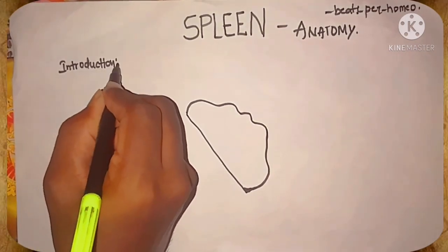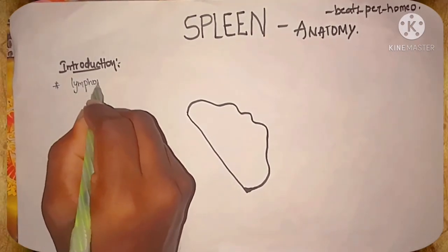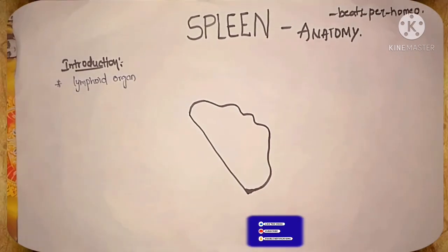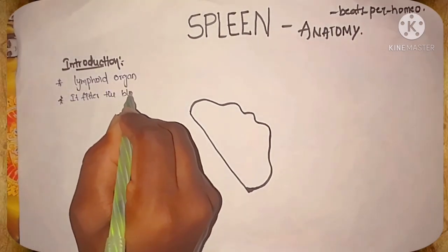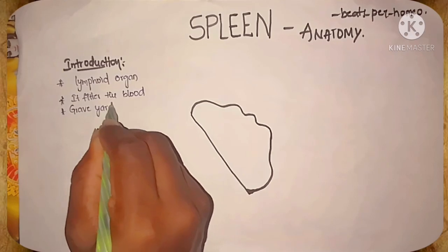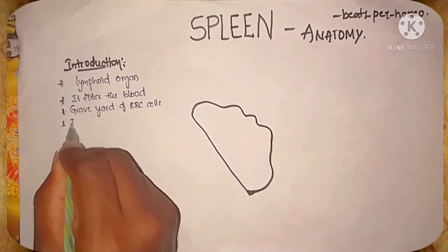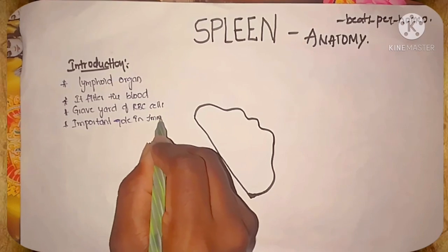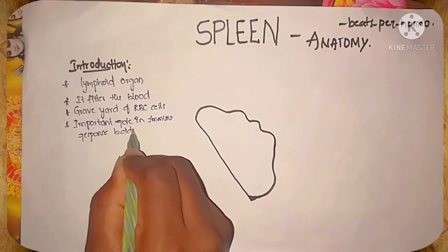Introduction: You all know that spleen is a lymphoid organ. It filters and purifies the blood as it is a graveyard of RBC cells. The spleen plays an important role in your immune system response. When it detects bacteria, virus, and other germs in the blood, it produces WBCs and lymphocytes to fight the infection.